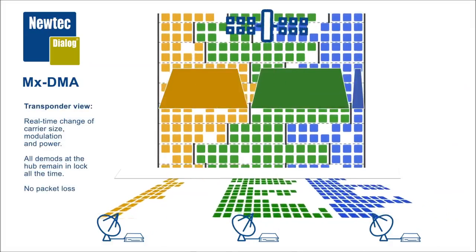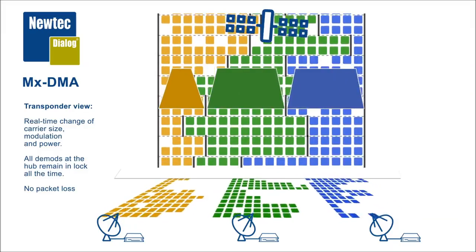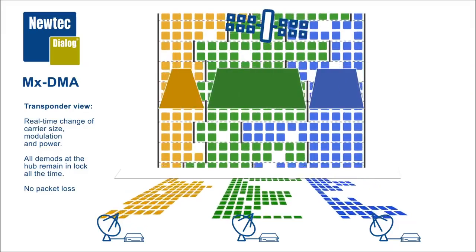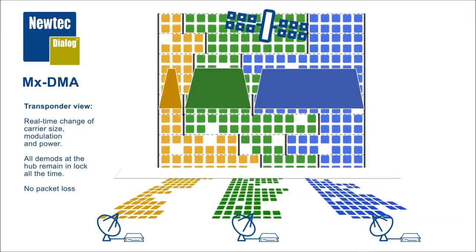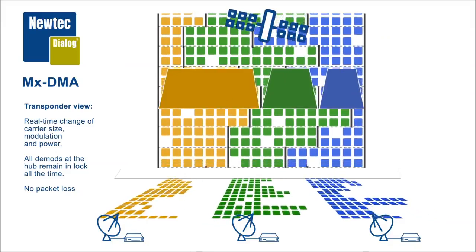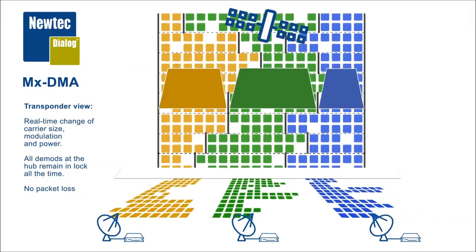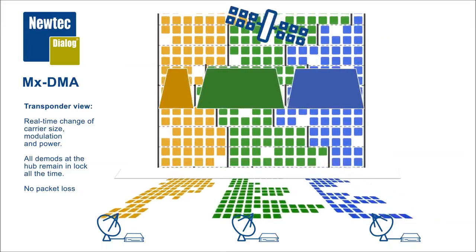As is the case with SCPC, here too every terminal has its own dedicated carrier. But the huge bandwidth savings reside in the fact that that carrier has a change in symbol rate, center frequency, modulation and coding, and power every second in function of the weather conditions and or the traffic demand.